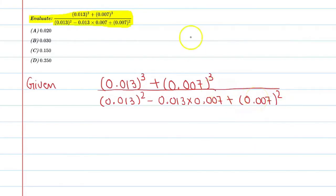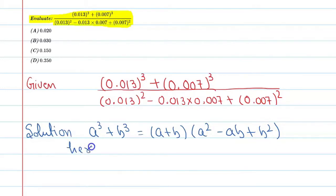The best way to solve this is to use an identity. The identity we'll use is a cube plus b cubed equals a plus b into a square minus ab plus b square. So let here a is equal to 0.013 and b is equal to 0.007.